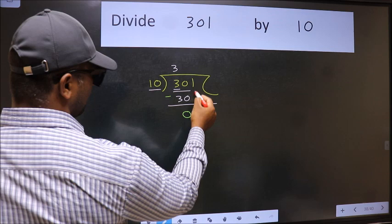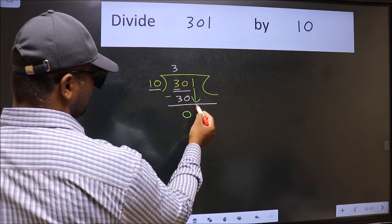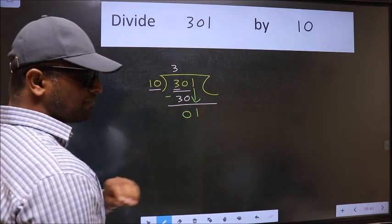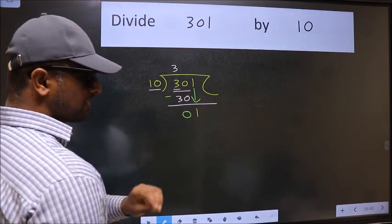After this, bring down the next number. So 1 down. After this step, the mistake happens. And the mistake is this.